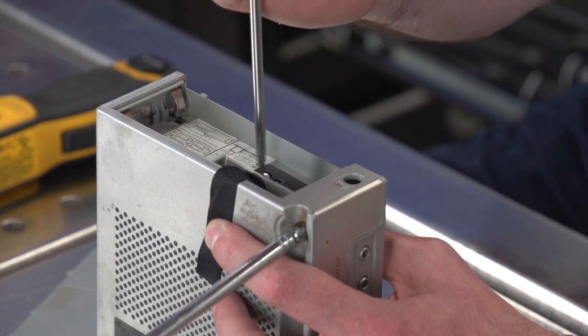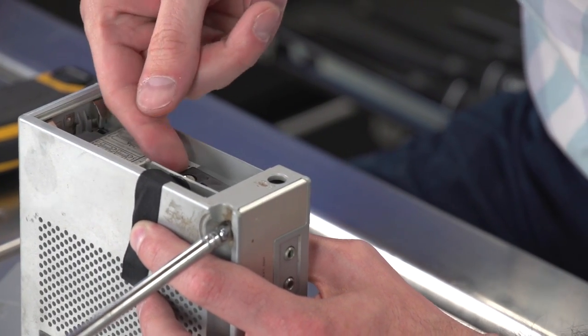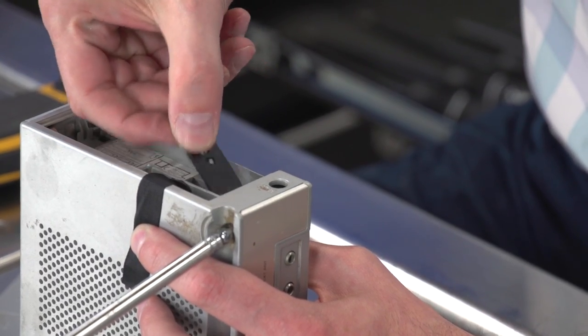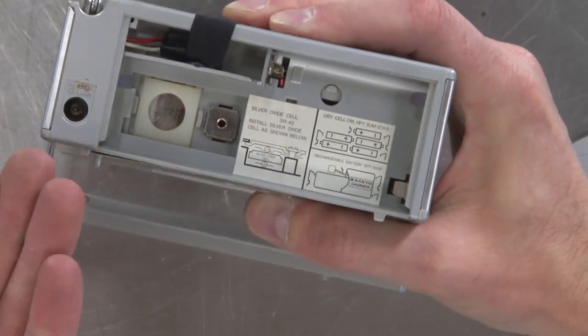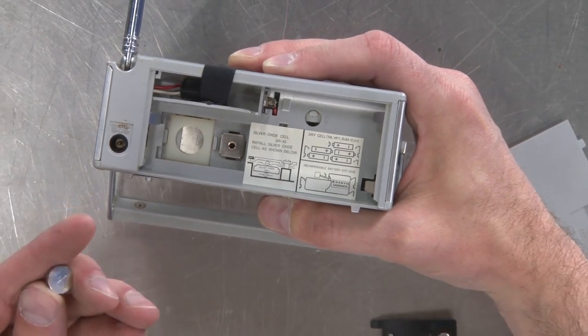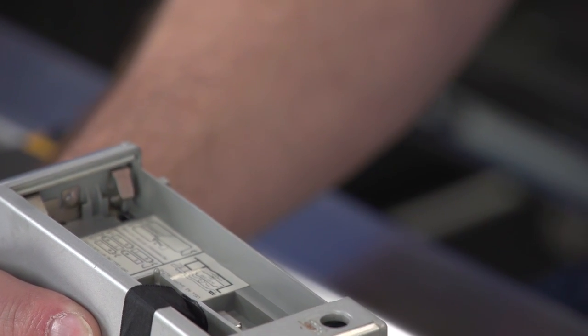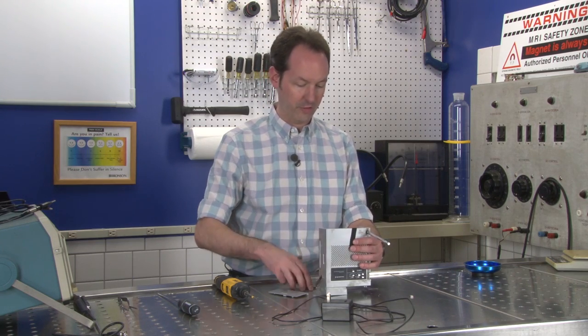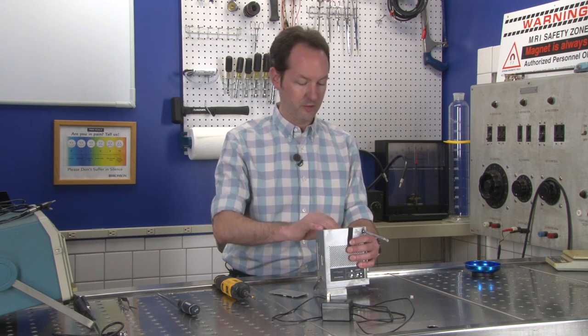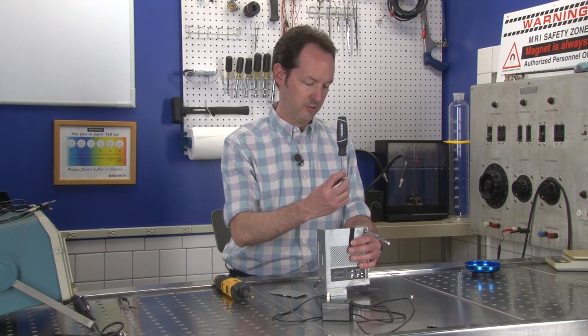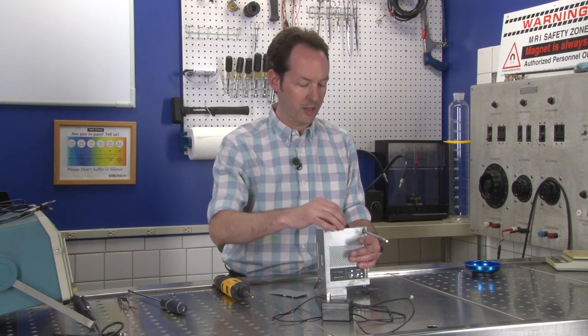The silver oxide cell is probably for the clock. There's our silver oxide cell. A little coin cell. That may actually be a silver oxide cell. I don't see anything that says lithium, which is what you'd expect today. I wonder how old this is. I'm going to guess 80s?